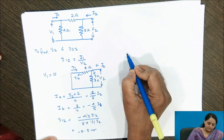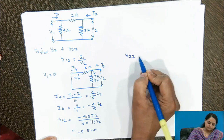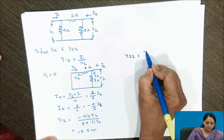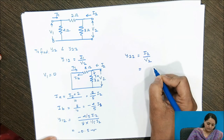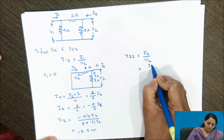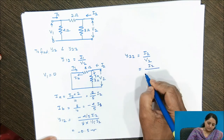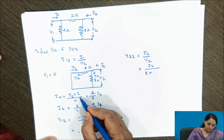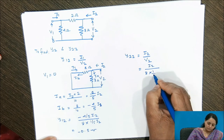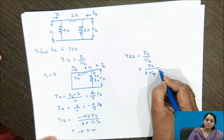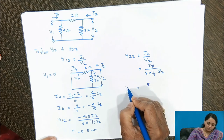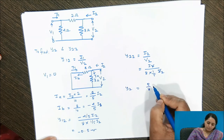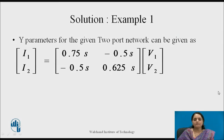Now let us calculate Y22, which is the ratio of I2 to V2. Voltage V2 equals 8 ohms multiplied by the current Ia, which is one-fifth of I2. The I2 terms cancel, giving Y22 equals 5 divided by 8, or 0.625 ohm-inverse. We have now calculated all four Y parameters for the given network.